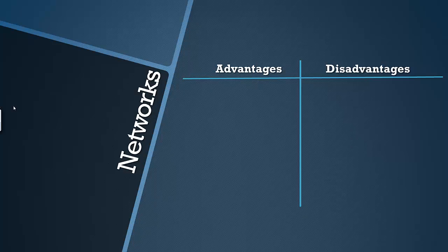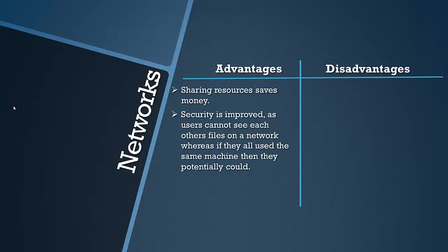There are some advantages and disadvantages to using computer networks. An advantage is that sharing resources saves money because you don't need to buy multiple devices — you can use just one on the network. Security is also improved as users cannot see each other's files on the network, whereas if they all used the same machine they could potentially access each other's files. On a network you can't just control another computer.